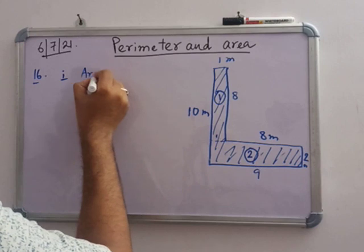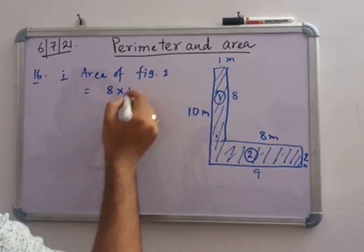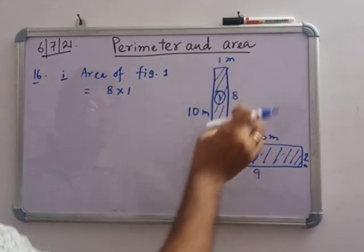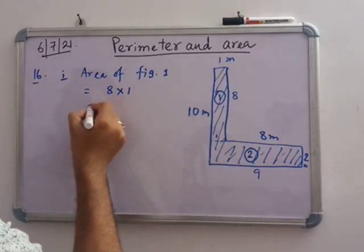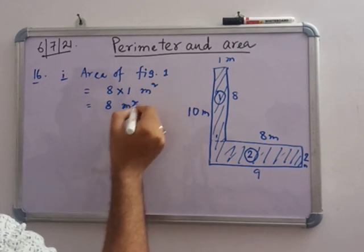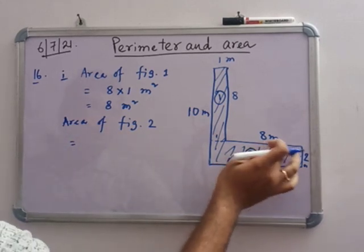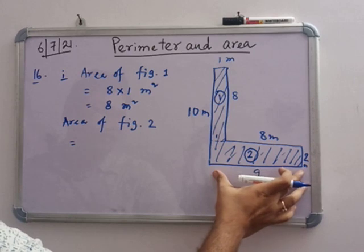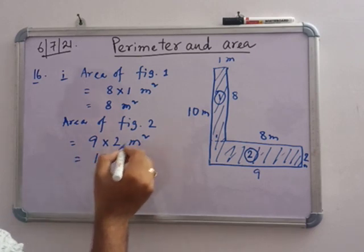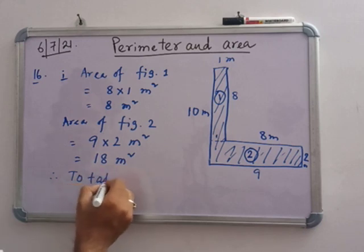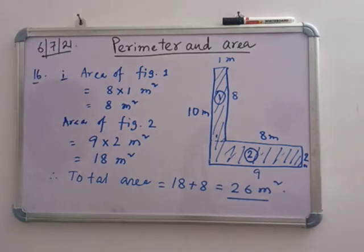Area of figure 1: the length is 8 (because the total is 10 but this length is 8) and the breadth is 1. So 8 into 1 equals 8 meter square. Area of figure 2: the length is 9 (because 8 plus 1) and the breadth is 2. So 9 into 2 equals 18 meter square. Total area is 8 plus 18, which is 26 meter square. Note it down.